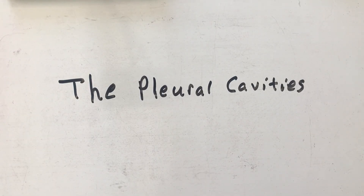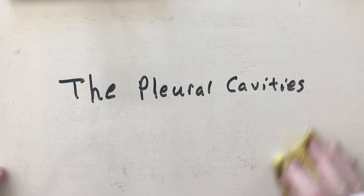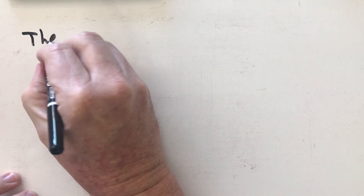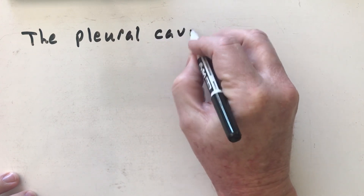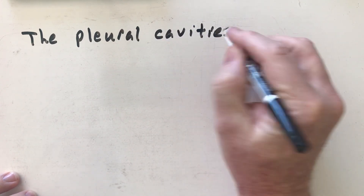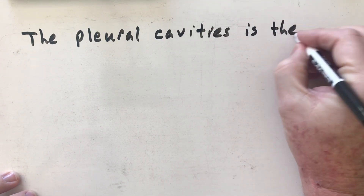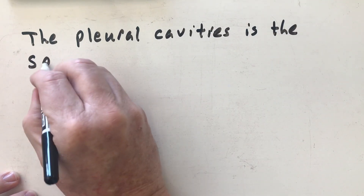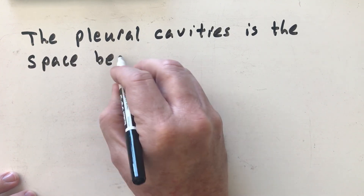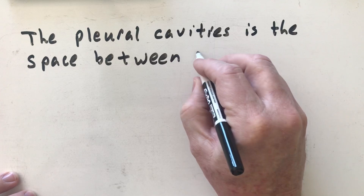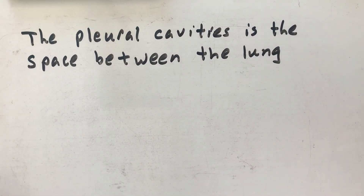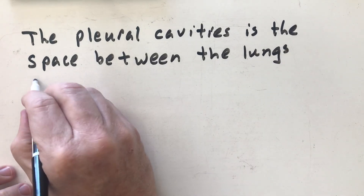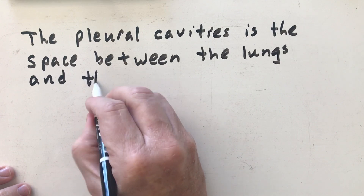In this video we are going to talk about the pleural cavities. The pleural cavities is the space or the cavity between the lungs — you have one on each side — and the thoracic wall.